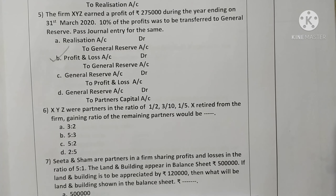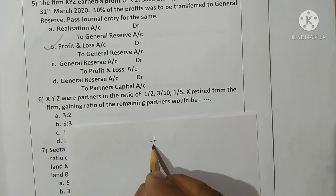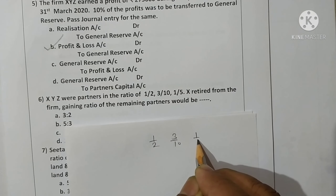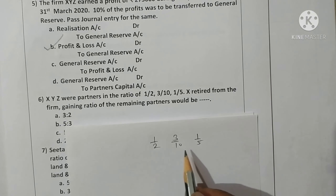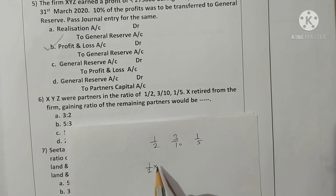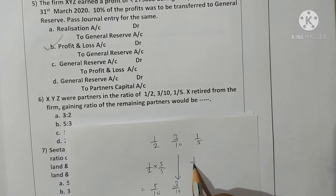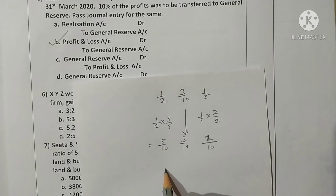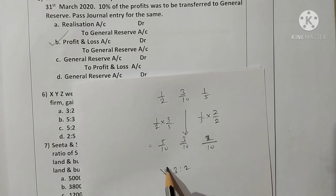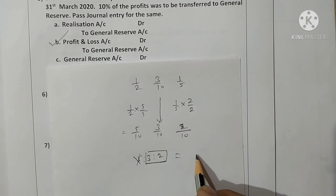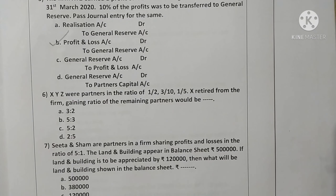Question six: X, Y, Z were partners in the ratio of 1/2, 3/10, and 1/5. X retired from the firm; the gaining ratio of the remaining partners would be — assuming new ratio is the same as before. The largest denominator is 10, so converting: 1/2 becomes 5/10, 3/10 stays, 1/5 becomes 2/10, giving ratio 5:3:2. After X retired, remaining ratio is 3:2. Therefore new ratio and gaining ratio will be 3:2. Option A is correct.